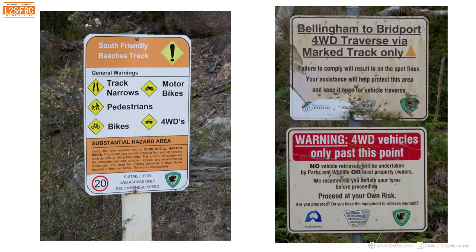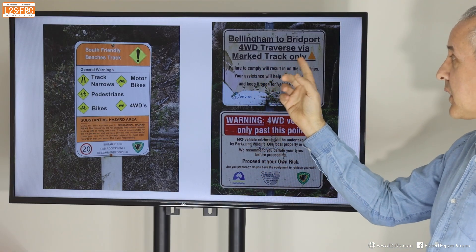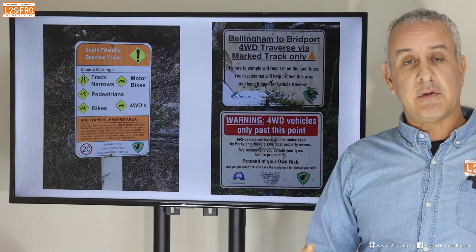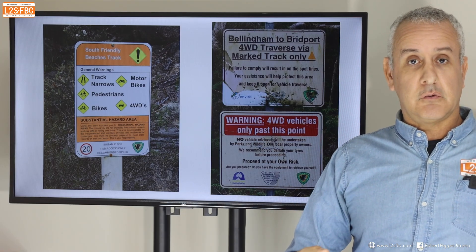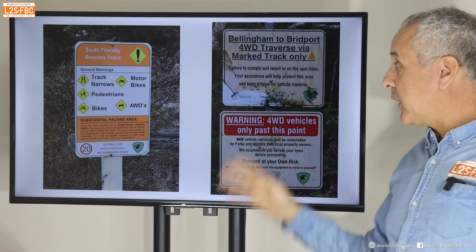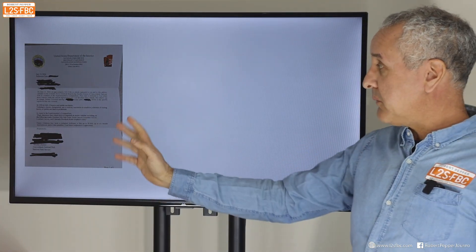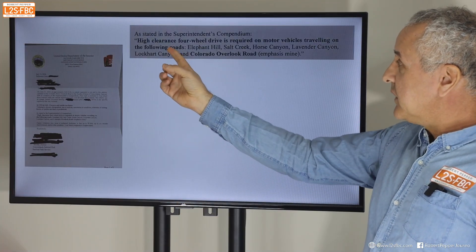In Australia, signs are very clear — for example: 'Warning: motorbikes, pedestrians, bikes — four-wheel drives only, hazard area,' or 'Warning: four-wheel drive vehicles only past this point.' When Australians say four-wheel drive, we kind of know what that means — and we know that even though a Subaru WRX STI is technically a four-wheel drive, we know not to take it on tracks like those.